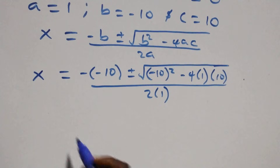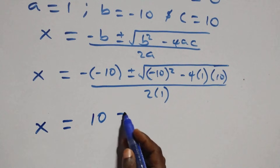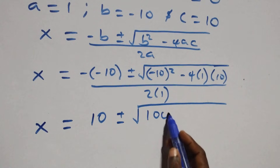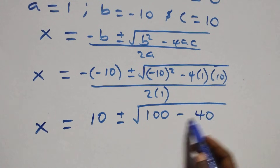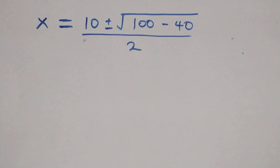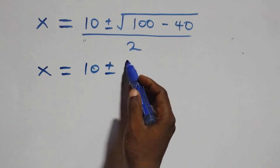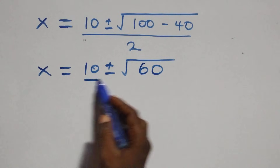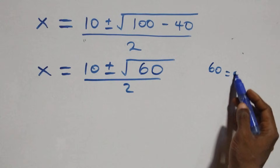This gives x equals to 10 plus or minus square root of 100 minus 40, over 2. That is, x equals to 10 plus or minus square root of 60, over 2. We can also rewrite 60 as 4 times 15.